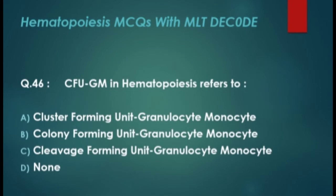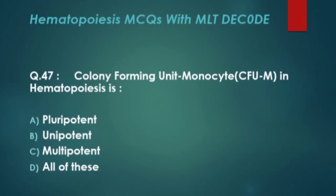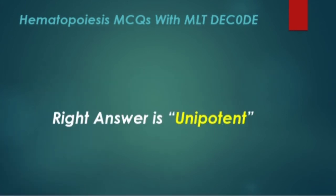Next, MCQ 46: CFU-GM in hematopoiesis refers to? Options are: pluripotent, unipotent, multipotent, and all of these. The right answer is unipotent.